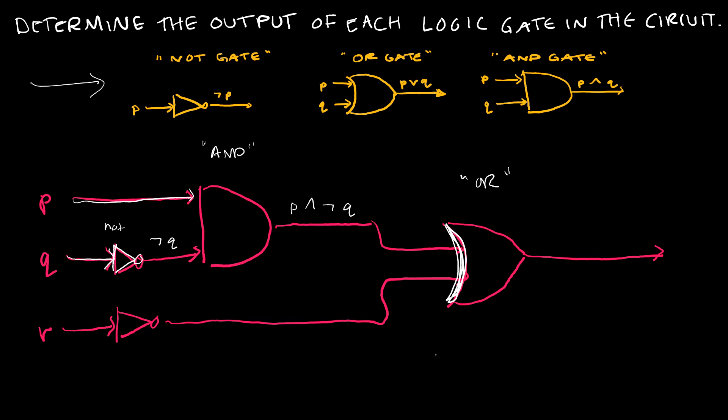Now, what else is going into the OR gate? Well, let's take a look down here. I've got R that's going into a NOT gate, which means my output here is not R. So into my OR gate I've got P and not Q or not R. So that's everything that I would have to do there. This is the overall result. To do this correctly, you would have to make sure that you give the output for each logic gate in the circuit.